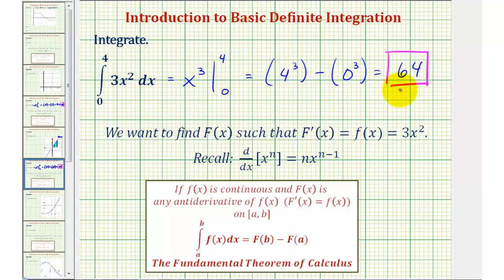There is one more important thing to mention. The function f of x equals three x squared is non-negative over the closed interval from zero to four, and therefore the value of this definite integral would be the area bounded by the function and the x-axis over the closed interval from zero to four. Let's look at this graphically.